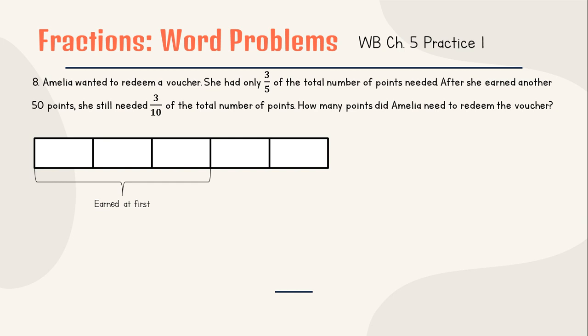She still needed 3/10. Because 3/10, these 5 boxes, we must cut it into how many? Make it 10, make it half. So now we have 10 boxes: 1, 2, 3, 4, 5, 6, 7, 8, 9, and 10. And now we know that 3/10 of this is needed.